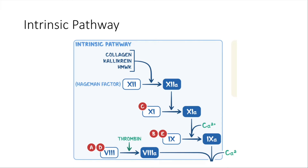Let's look at the intrinsic pathway. Once initiated, it causes activation of factor 12 to factor 12a. Factor 12a converts factor 11 into factor 11a, which with the help of calcium ions converts factor 9 into factor 9a. Thrombin supports the conversion of factor 8 into factor 8a. Factor 9a and 8a combine, and with more calcium ions enter the common pathway. That sums up the intrinsic pathway.